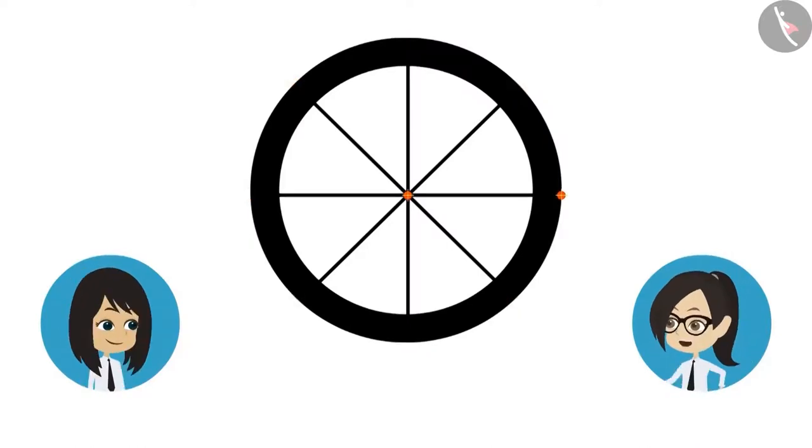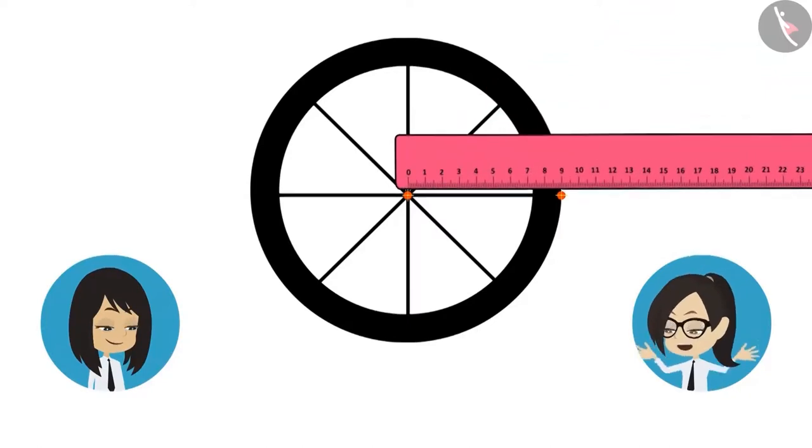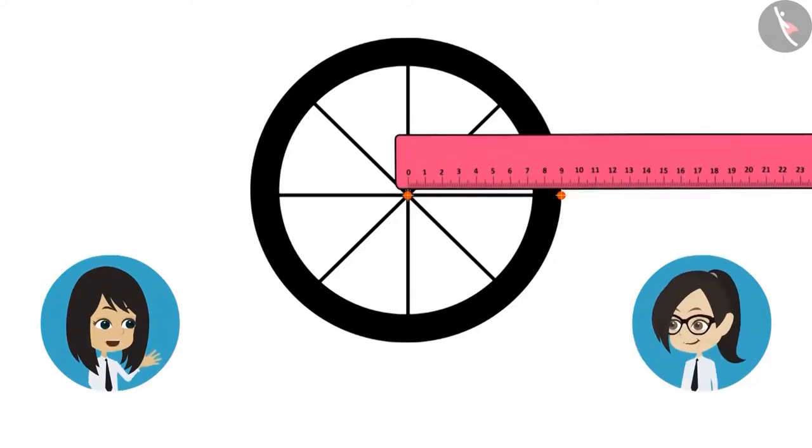Okay. Now let's measure the distance between these two points using a scale. Radius of the wheel of bicycle is 9 inches.